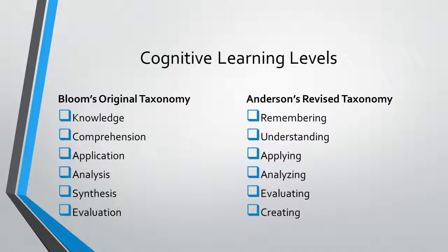Learning identified by Benjamin S. Bloom indicates that the LPN and ASN require three learning domains: cognitive — the process of acquiring knowledge; affective — the process of learning involving values and attitudes; and psychomotor — the process of developing or enhancing skills. Bloom expanded on this theory and noted that there are six learning achievement levels: knowledge, comprehension, application, analysis, synthesis, and evaluation. Each level provides objectives that identify differences in level of thinking and knowledge between the LPN and ASN program.